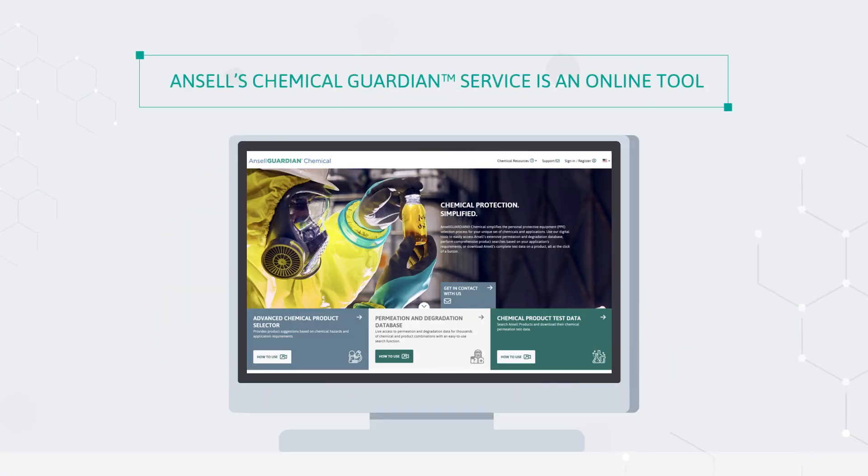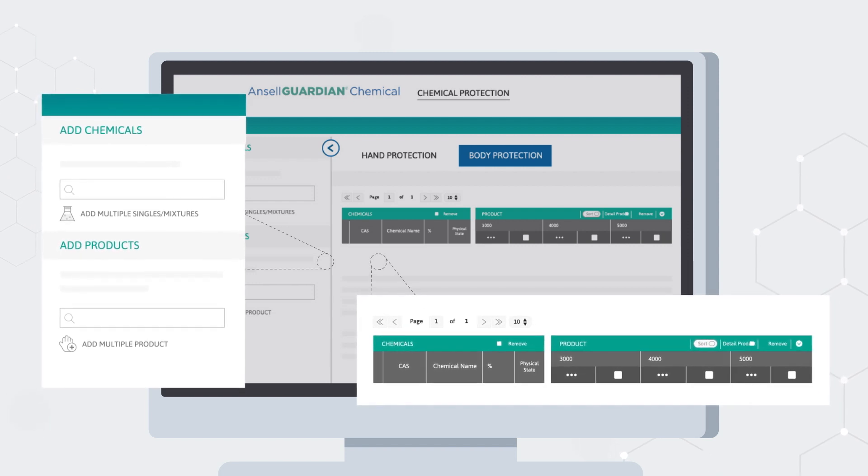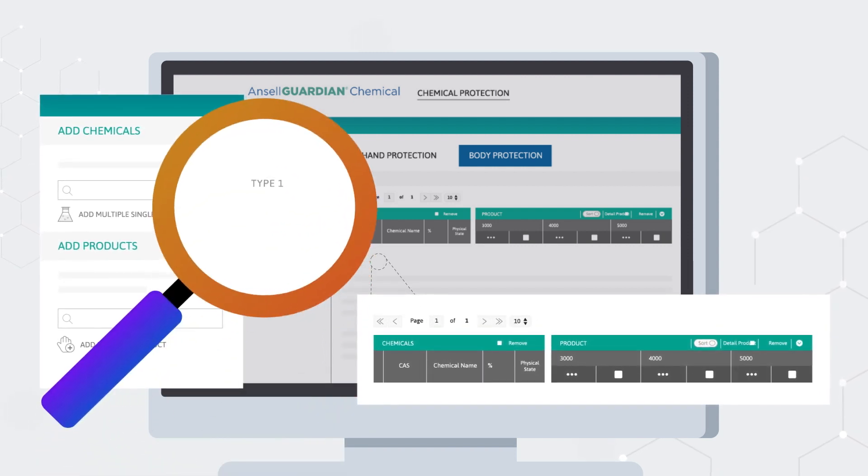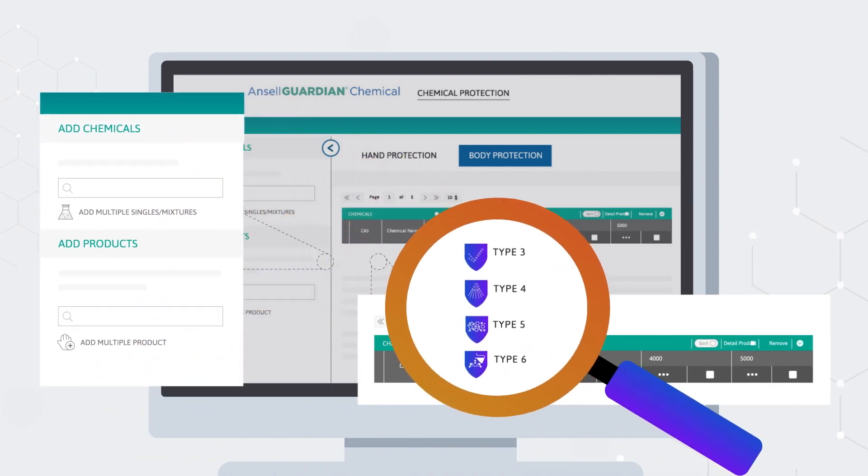Ansell's Chemical Guardian Service is an online tool that provides access to permeation data on hundreds of common chemicals, and can help identify the suitable protective clothing options to deliver the optimal result when it comes to PPE selection.